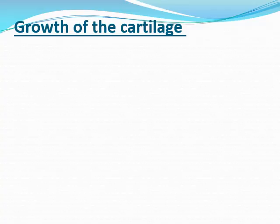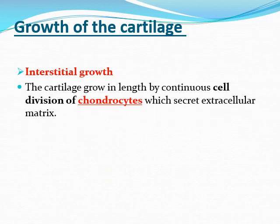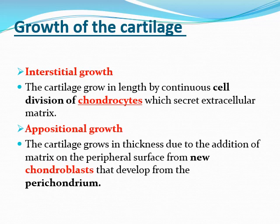How does cartilage grow? By interstitial growth, which is due to division of the chondrocytes increasing the length. And by appositional growth — increase in diameter or thickness — as the inner chondrogenic layer gives rise to chondroblasts, which form new cartilage on a previously formed one, increasing the thickness of the cartilage. Thank you, dear students. Assalamu alaikum warahmatullahi wabarakatuh.